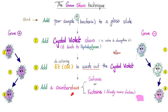Step three: add a counterstain, which is fuchsin — that's why we call it eosin or fuchsin — a pink stain. Since the gram-positive did not lose its color, it will remain purple. However, the gram-negative, now colorless, will acquire the new color and become pink. The end result: gram-positives appear purple, gram-negatives appear pink. That was the story of the gram stain.